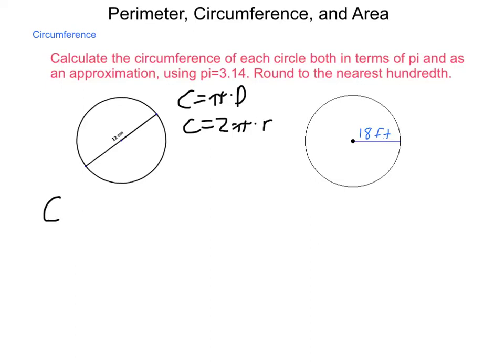So, let's begin with doing it exactly in terms of pi. So, circumference. Since in this first circle, we are given the total diameter, distance all the way across the circle, we're going to use the diameter formula. And we get circumference equals pi times the diameter. Diameter is 12, so this would be 12 pi.